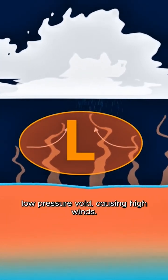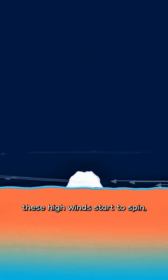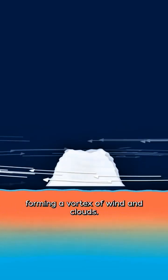Air rapidly rushes into this low-pressure void, causing high winds. Due to the Earth's rotation, these high winds start to spin, forming a vortex of wind and clouds.